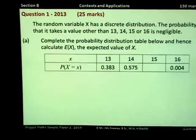In part A, we are asked to complete the probability distribution table below, and hence calculate E(X), which is the expected value of X. In this table, we are missing one of these probabilities. For any probability distribution table, we should know the sum of the probabilities must sum up to 1. Mathematically, we can write this as sigma p equals 1.